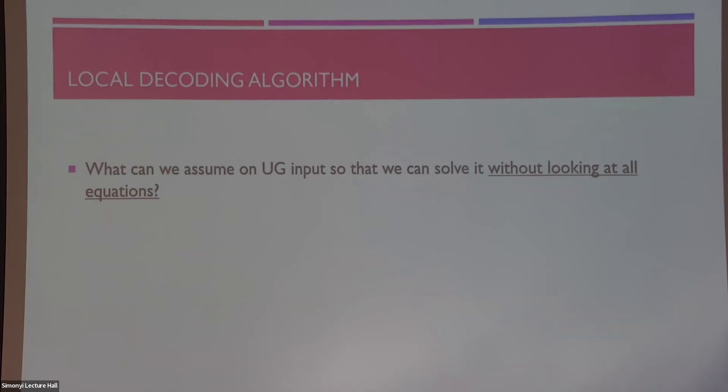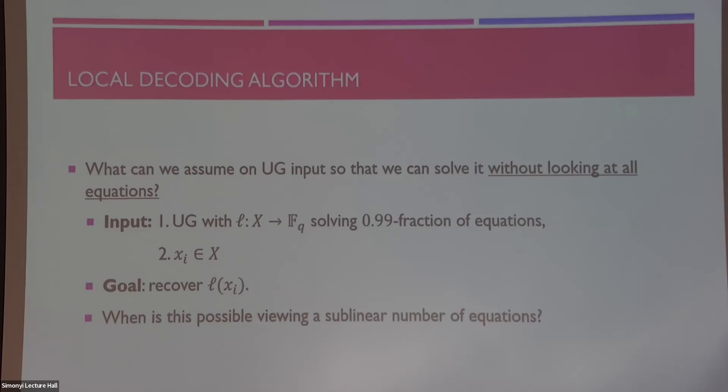This is basically a problem which I call a local decoding algorithm for unique games, but you can state it like this. What additional assumptions do we have to make on this unique game's input so that not only we can solve it easily, but in fact we can sort of solve it without even looking at most of the equations? Without saying exactly what the model of computation is, maybe let me state something. Basically, we want to perform a task where we take as input a unique game, which we already know or assume that there is some good solution solving most of the equations, and also somebody gives us a single distinguished variable.